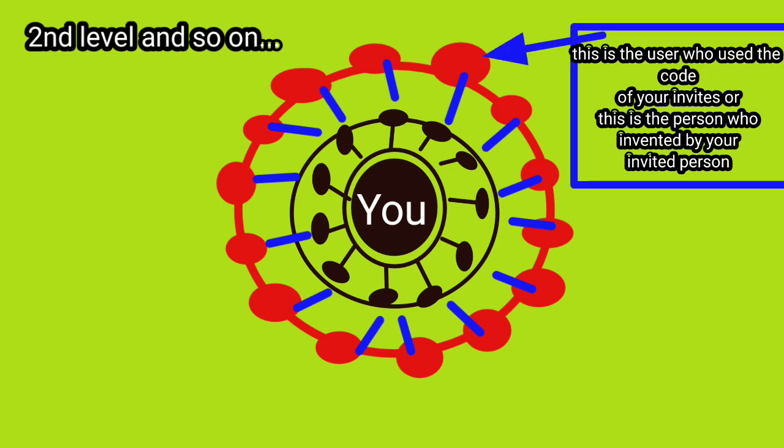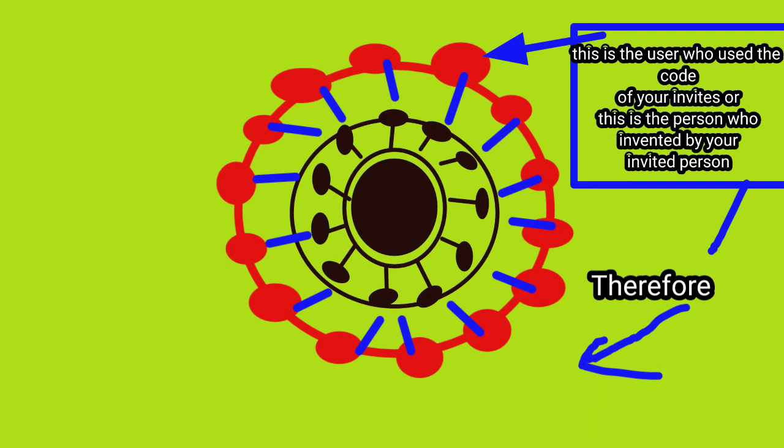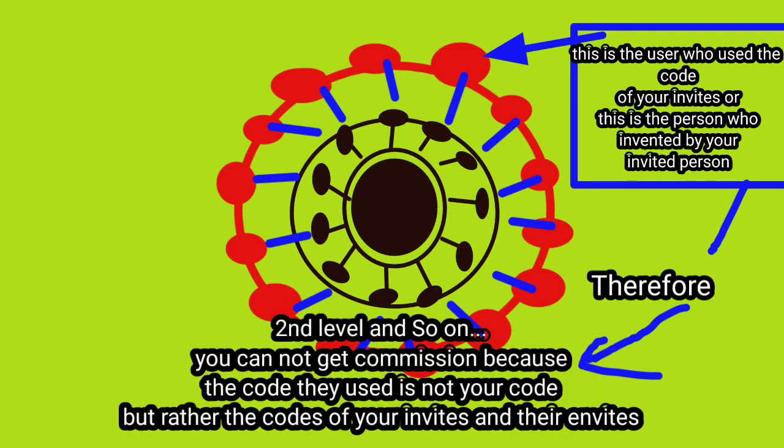At the second level, this is the user who used the code of your invites, or the person who was invited by your invited person. Therefore, at the second level and beyond, you cannot get commission because the code they used is not your code, but rather the code of your invites and their invites.